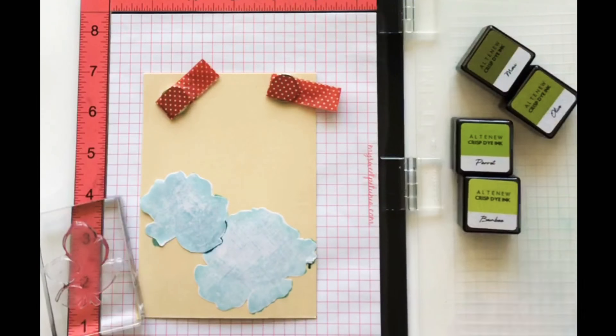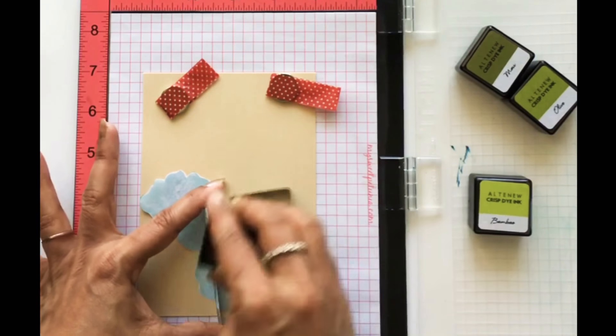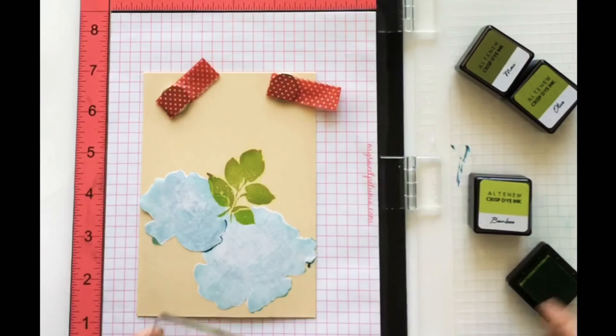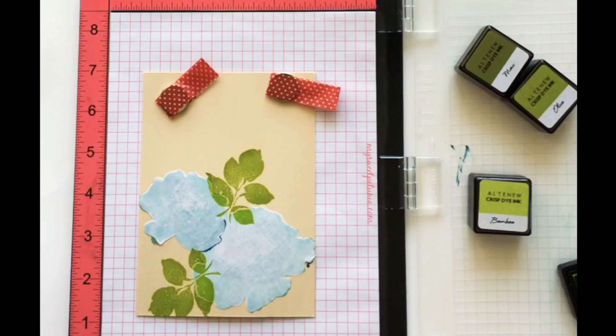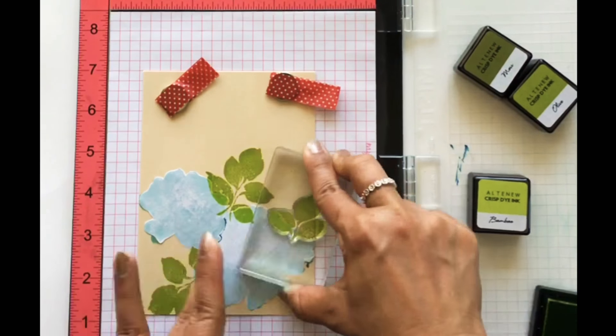For my leaves, I have used Altenew Tropical Forest inks. This pack also has four shades of green inks and I chose Parrot and Bamboo shades for my leaves. I have layered some of the leaves with Moss shade.